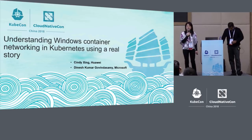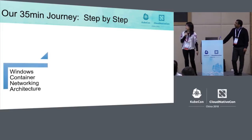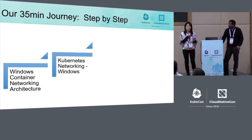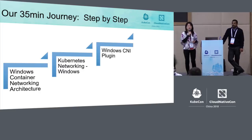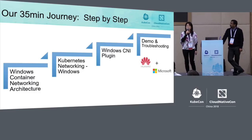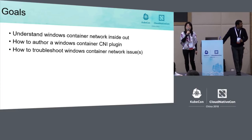Today, Dinesh and I are going to use a real story to help you understand Windows container networking in Kubernetes. In the next 35 minutes, we're going to talk about Windows container architecture, walk through Windows container network in a Kubernetes cluster, then from a cloud provider's perspective, explain what CNI plugin is and how to write one. Last but not least, we're going to demo Huawei Windows container service, collect some network tracing, and troubleshoot some issues. We hope you'll have a better understanding of Windows container networking and what CNI is, and be able to write a CNI plugin.